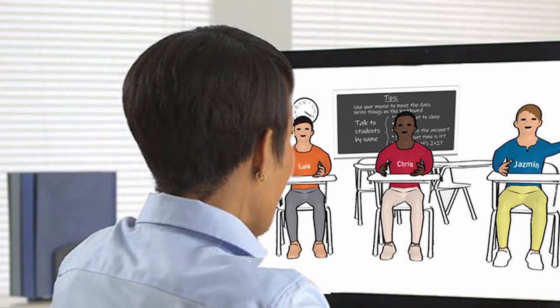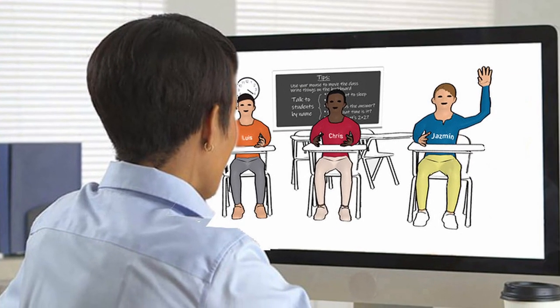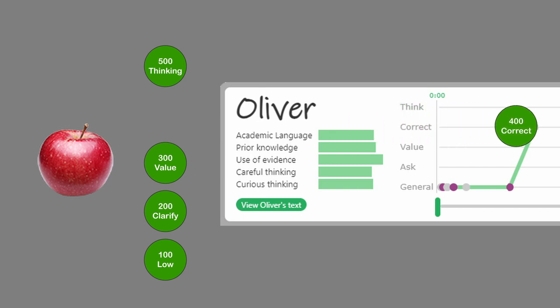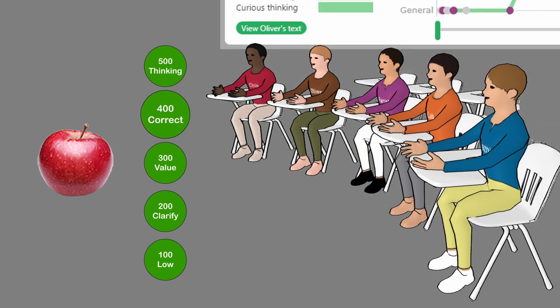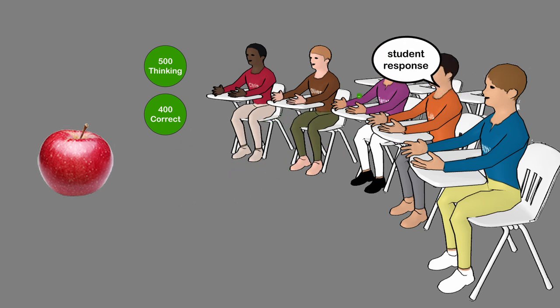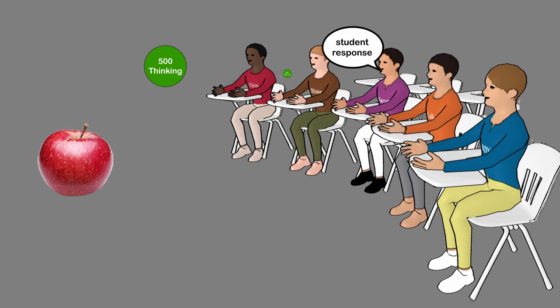Teaching with Grace responds to a teacher's remarks in two ways. First, each one is analyzed and categorized according to which of the five levels of feedback it represents, and is then offered to the teacher as real-time feedback. Secondly, Grace has the virtual students respond to remarks in a meaningful way that promotes dialogue.